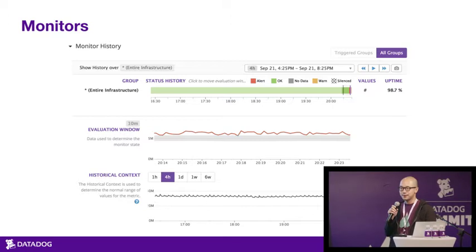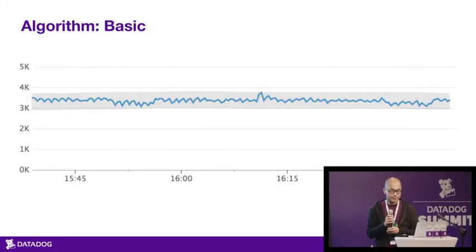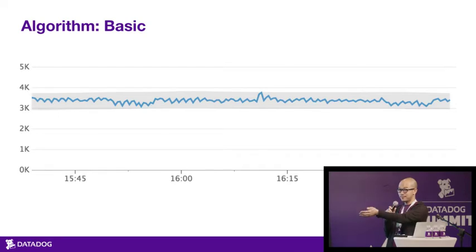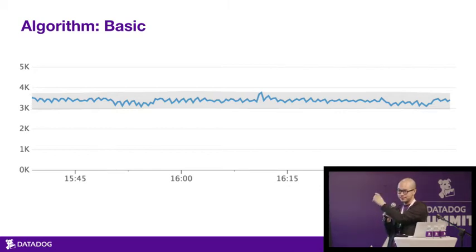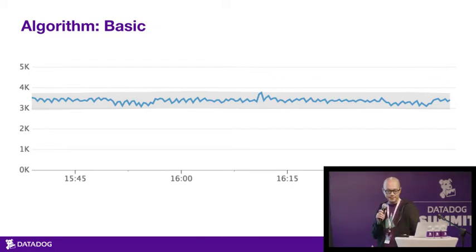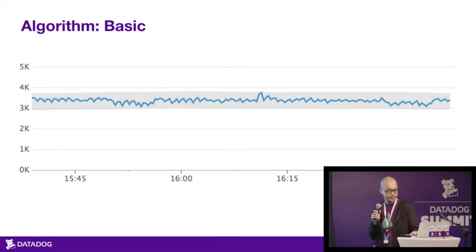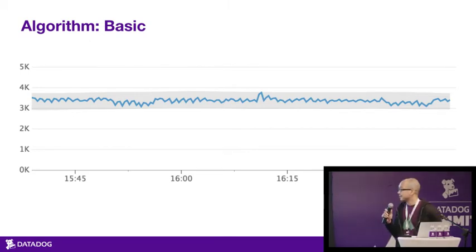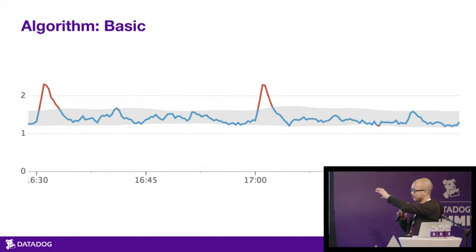So how do we use past history to determine what's normal? The simplest algorithm is called BASIC. It looks at the immediate past and calculates the normal range of values from what it's seen, then draws the bands. Instead of using mean and standard deviation, we use quantiles because they're more robust. It's great for metrics that are steady or whose levels change very slowly. BASIC being somewhat robust — for instance, when it sees a spike, it'll ignore it and continue drawing the envelope.